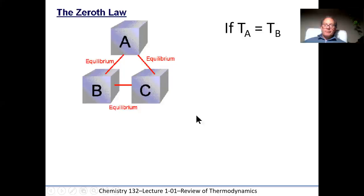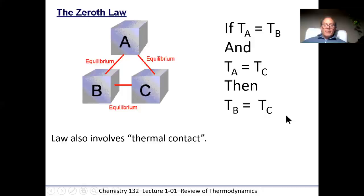The zeroth law: if temperature A equals temperature B, and temperature A also equals temperature C, then temperature B must equal temperature C — that's pure logic. The law also involves thermal contact: these substances all have to be in thermal contact with each other, meaning the particles must be able to collide with one another, and the warmer substance will transfer its energy to the cooler substance.